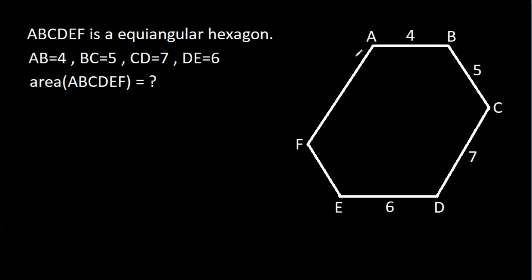In this video, we have been given that ABCDEF is an equiangular hexagon, with AB = 4, BC = 5, CD = 7, and DE = 6. We have to find the area of ABCDEF.